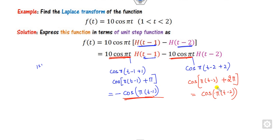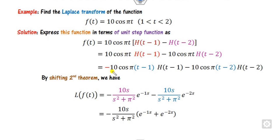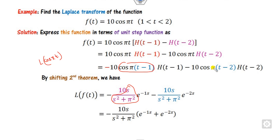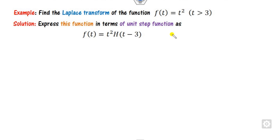After simplification, the arguments match the required (t − a) form. Applying the second shifting theorem: the result involves −e^{−s}·L{t} and e^{−2s}·L{cos(πt)}. The Laplace of cos(πt) is s/(s² + π²), giving the corresponding terms. These are the correct answers for each piece.